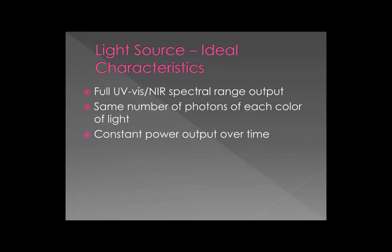In order to understand why we use what we use as light sources, we need to consider what characteristics we expect our light source to exhibit. There are basically three important considerations. First, my light source is going to need to provide photons across the full UV-visible near-infrared spectral range. Second, it would be ideal if the source could provide the same number of photons of blue light as of red light and green light — though I'll tell you up front that's not going to happen.